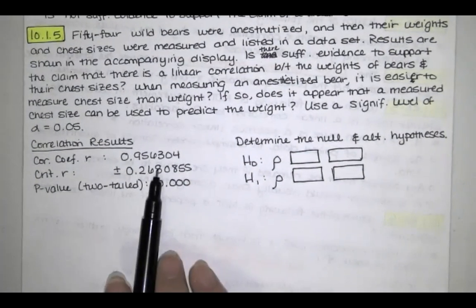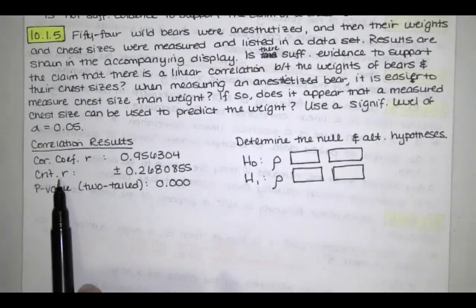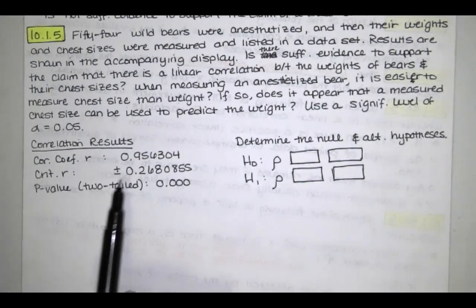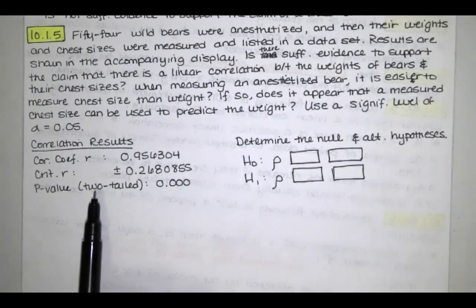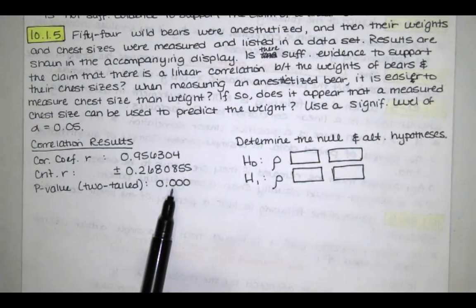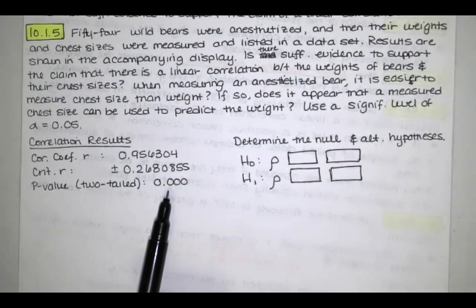So we've got our correlation coefficient r, we've got a critical value of r, actually two of them, and then we have the p-value for a two-tailed test of 0.000.